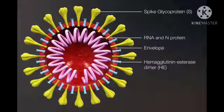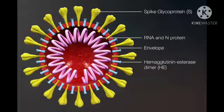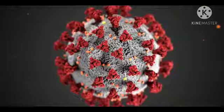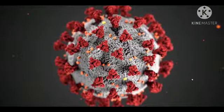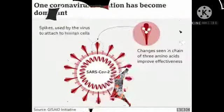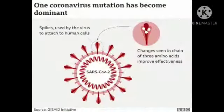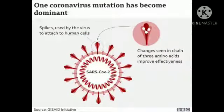Viruses are known to change their genetic material, that is RNA. Due to this, they change their structure. This makes it very difficult for scientists to make antiviral medicines and vaccines. For example, SARS-CoV-2 changes its spike structure, which has three improved amino acids. This happens due to the presence of RNA as the genetic material.